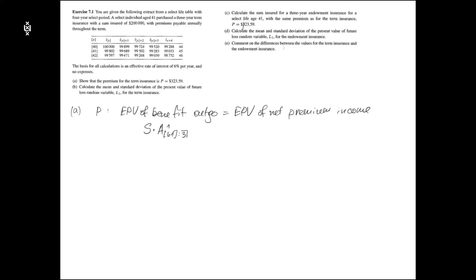Here S is $200,000. The premium income can be modeled by the corresponding 3-year term annuity. Therefore its expected present value is equal to P times the actuarial value of this 3-year term annuity due.